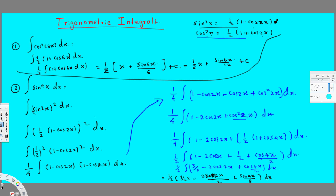That is almost our answer — we just need the constant. Now multiply everything by 1/4: this gives us 3x/8 - sin2x/4 + sin4x/32 plus constant. And that is our final answer. I hope you guys like this video, see you next time!